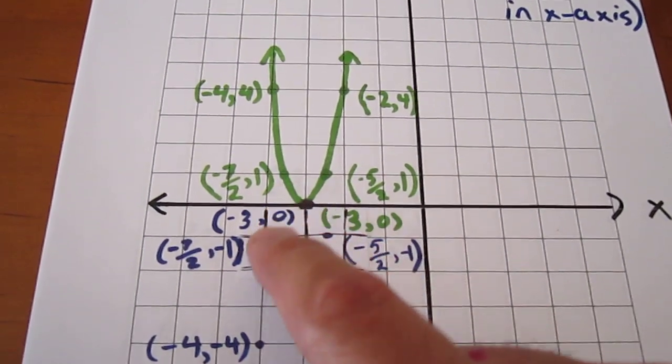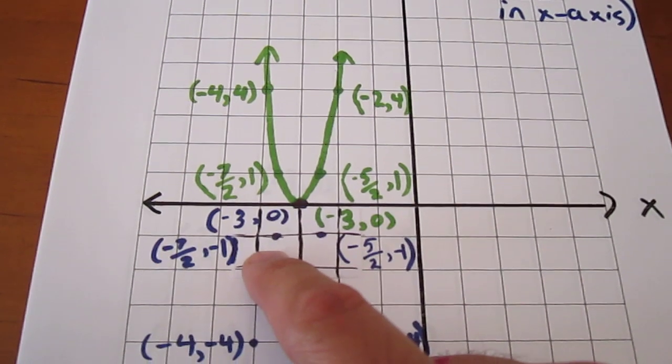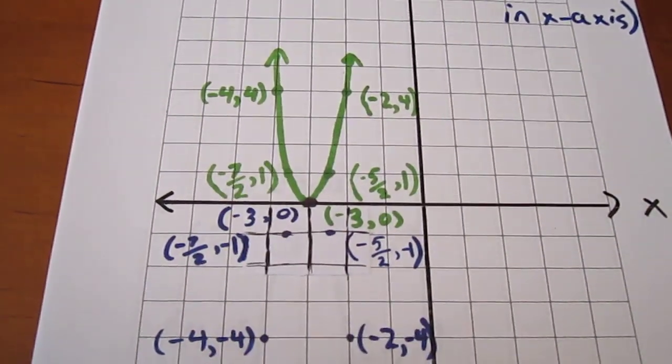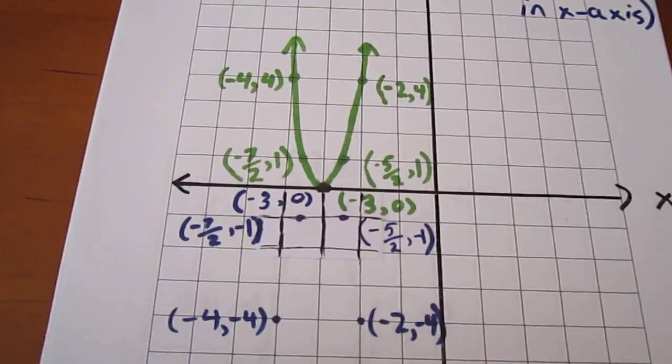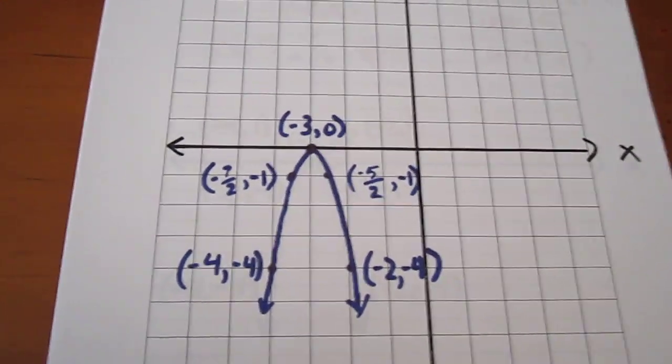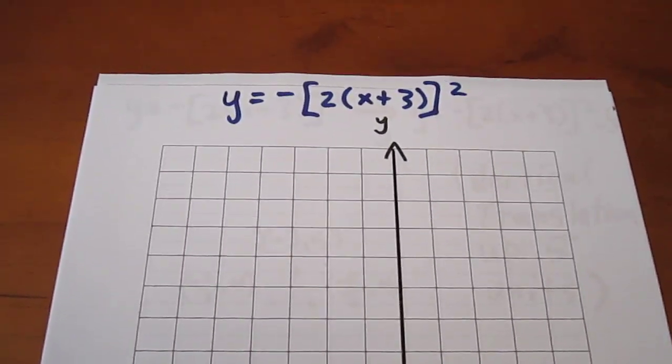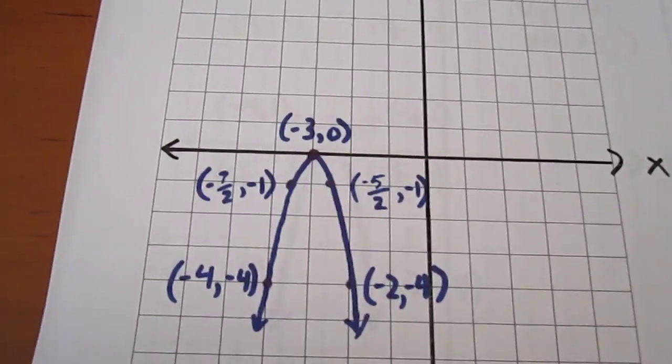Negative 7 halves 1 gets moved to negative 7 halves, negative 1. And negative 4, 4 gets moved to negative 4, negative 4. Now that we have the coordinates of these points, we can ignore the green curve and focus on the blue. And we're now three transformations into a 4 transformation process.